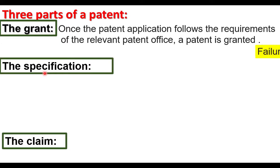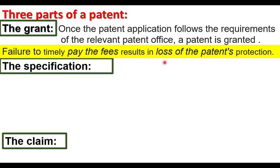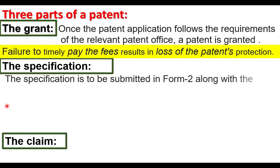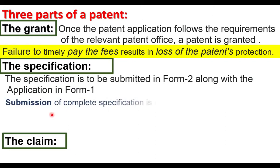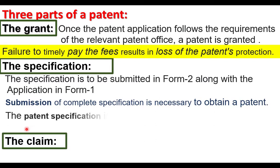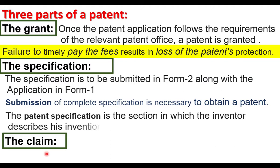The second part is the specification. Failure to timely pay the fees results in loss of patent protection, so patent requires paying fees. The specification is to be submitted in Form 2 along with the application in Form 1. Form 1 is the application for patent; Form 2 contains the specification, which is the entire detail about the research product or invention. Submission of a complete specification is necessary to obtain a patent.